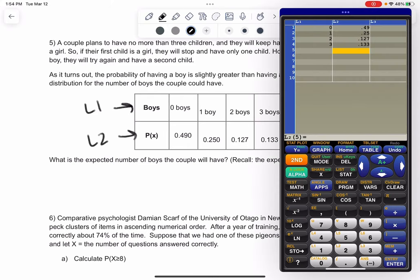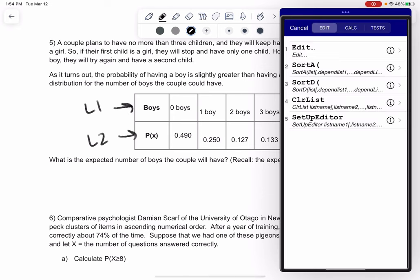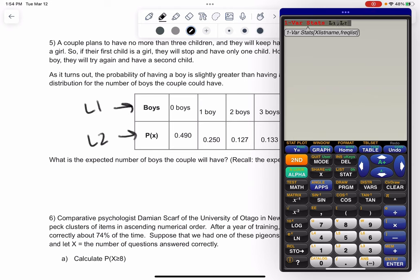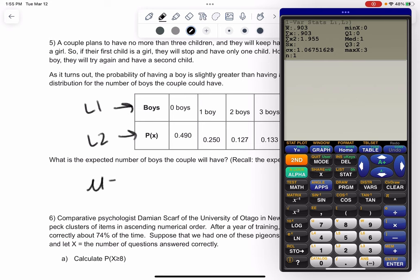So I already have the data in - the variable or the boys in L1, and the probability in L2. It stops at three because they're not going to have more than three boys. We'll go over to one of our stats, make sure we tell it that the probabilities are the frequencies, so L1 L2, and we get an average of 0.903. So again, no couple has this many boys - you either have one or none or two - but on average it'll be 0.903. That means some couples have no boys, that's why the average is a little less than one, but some will have one boy, some will have two boys. This is the average number of boys.